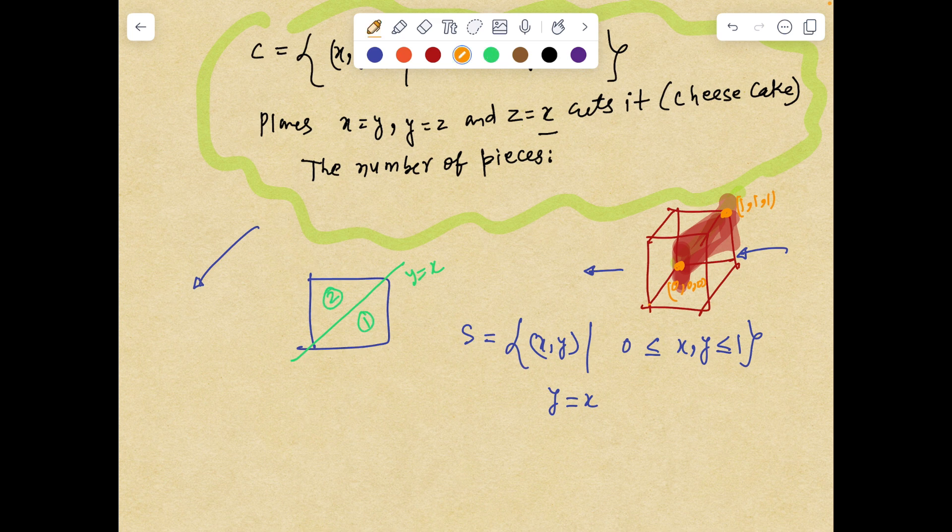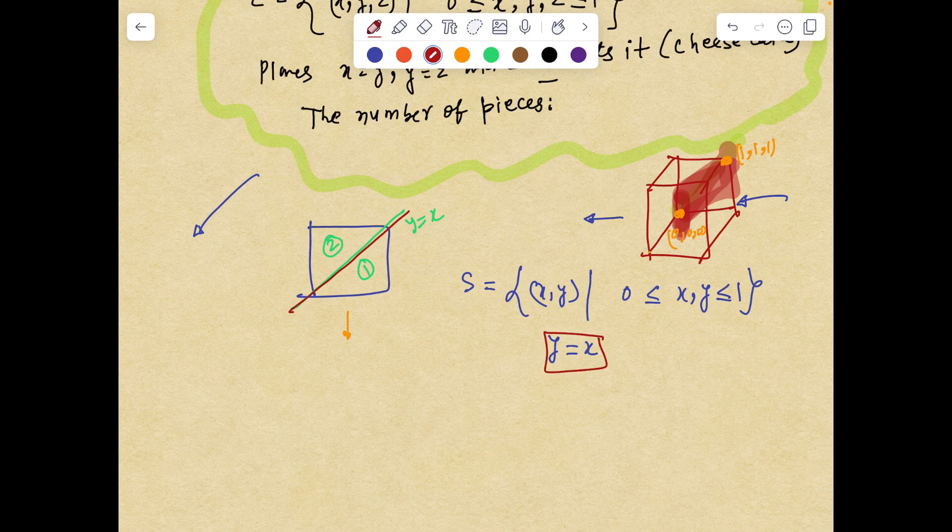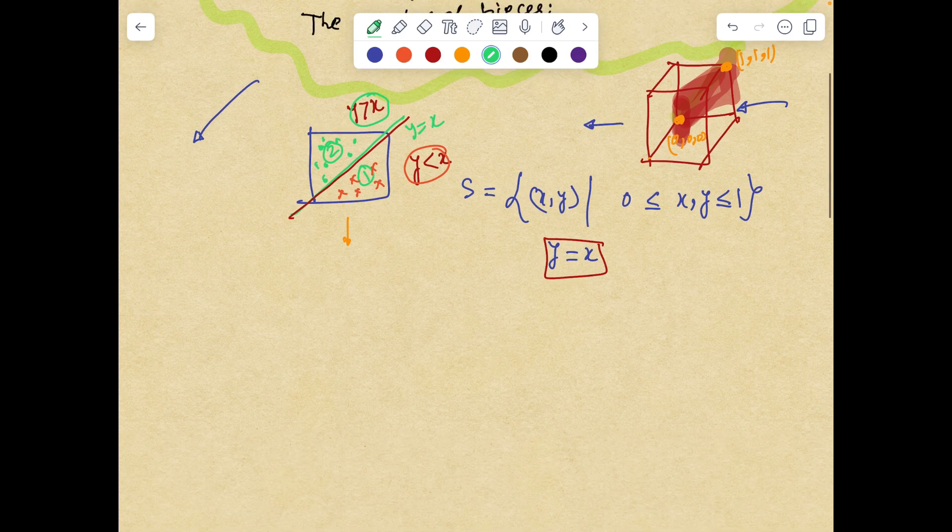But when you do the same thing in 3D the condition is not so obvious. But the realization from 2D is as follows. If I have a line y equals x, it divides the square S into two regions: one region is y less than or equal to x, the other is y greater than or equal to x. So if I pick any point in this region it will satisfy this restriction. Similarly, for every point in this region this inequality will be satisfied.